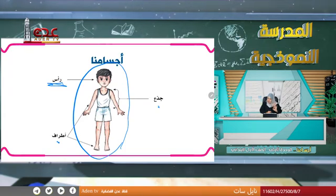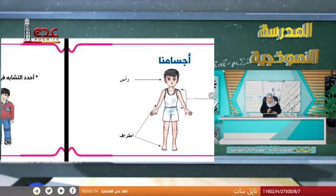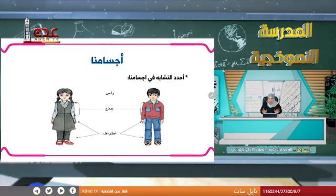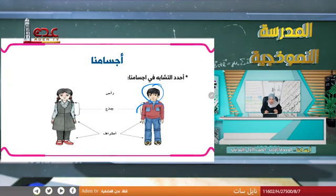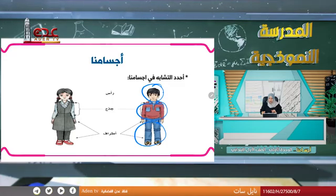أجسامنا تتكون من ثلاثة أجزاء: الرأس، والجذع، والأطراف. والأطراف هي اليدان والرجلان. وكل الناس يملكون الرأس كما ترى في الصورة، وجذع كما ترى في الصورة، وأطراف.